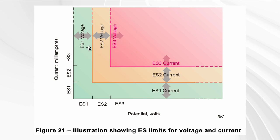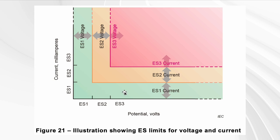The conceptual framework is: ES1, ES2, ES3. ES1 means basically safe — not going to hurt, or only very slightly. This applies when both voltage and current are very low. It's a bit more complicated than that, as we'll get to in the next slides.